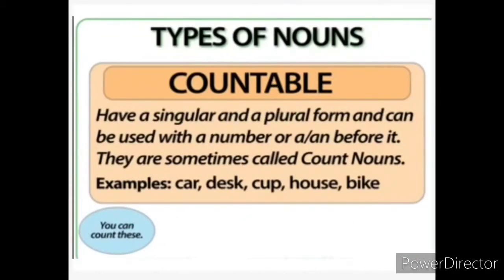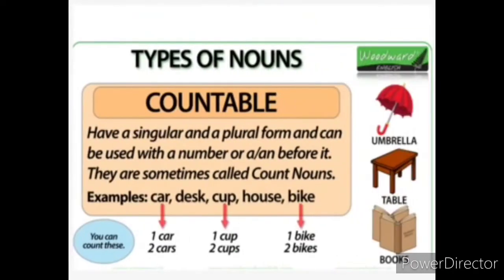Next, countable nouns. Countable nouns have a singular and a plural form and can be used with a number, 'an', or 'a' before them. They are sometimes called count nouns. Examples: car, desk, cup, house, bike. For instance: car — cars; cup — cups; bike — bikes. It can be in singular or plural form. If you can count the number of things, persons, or anything, that comes under countable nouns.